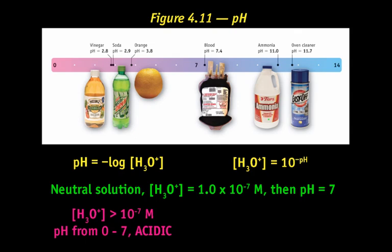If the hydronium ion concentration is greater than 10^-7 moles per liter, the pH ranges from 0 to 7, and the solution is acidic. For example, if the hydronium ion concentration is 10^-3, the logarithm of 10^-3 is -3, so the pH is 3.